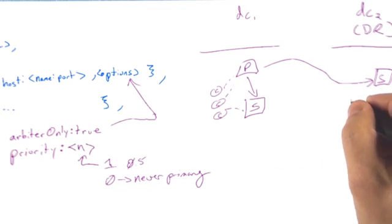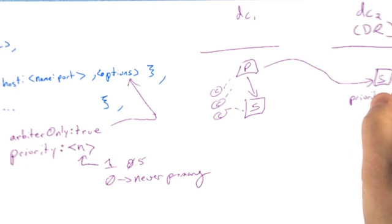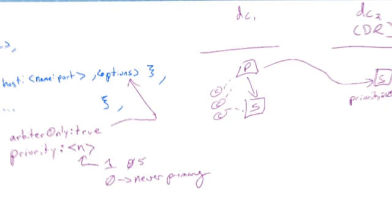What we would do then is we would just simply add priority 0 to this member over here, and then it will never become primary.